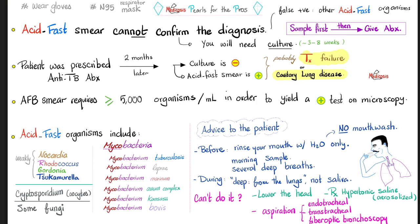Moreover, before you do the test, do not give antibiotics. Because if you give antibiotics, you will kill the bacteria and the results might come back as false negatives. If you want to confirm the presence of the bacteria, don't kill the bacteria beforehand. After you take your sample, you can start the antibiotics if you have enough suspicion that this might be tuberculosis.